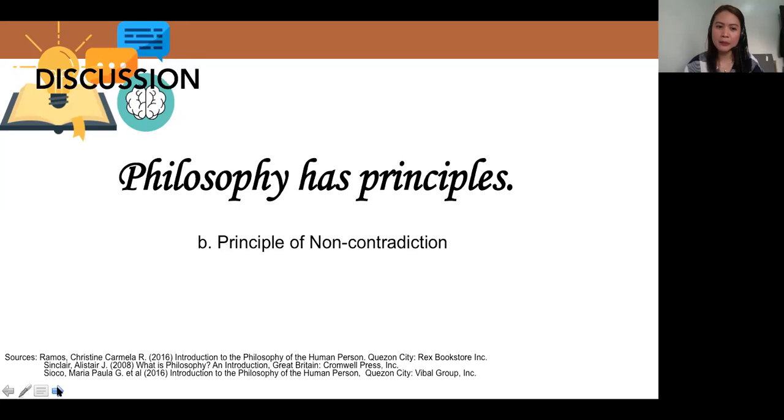Principle of non-contradiction. It is impossible for a thing to be and not to be at the same time and at the same place. So it's impossible for you not to be a human and to be a human at the same time. It's impossible for our body to be in different places because it's just one body.